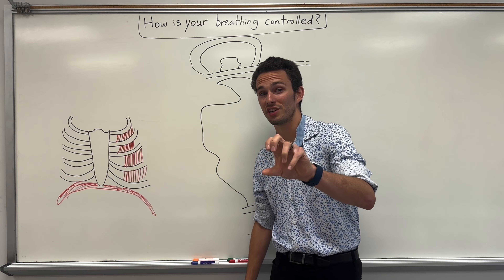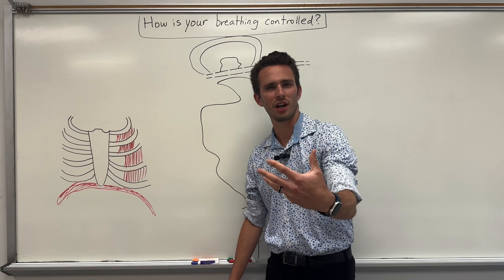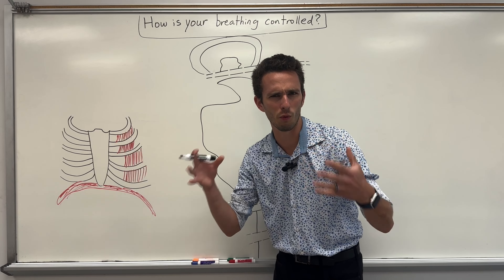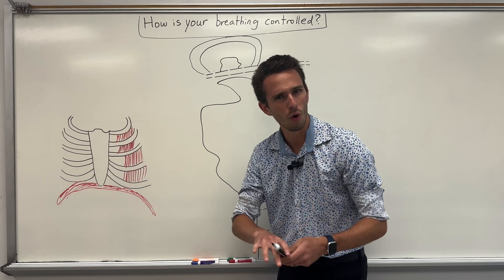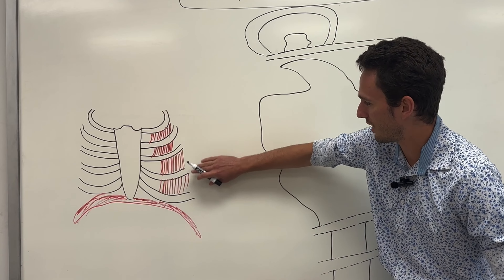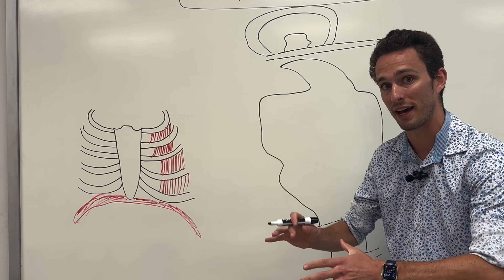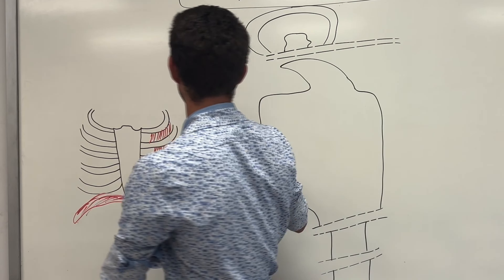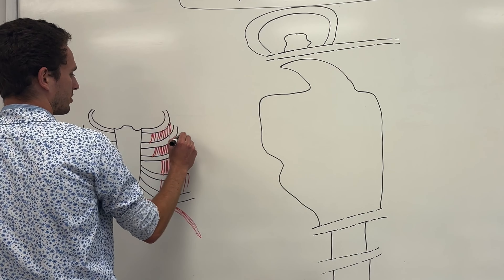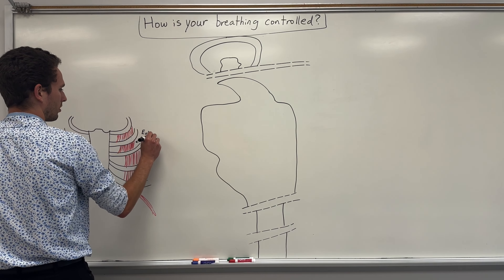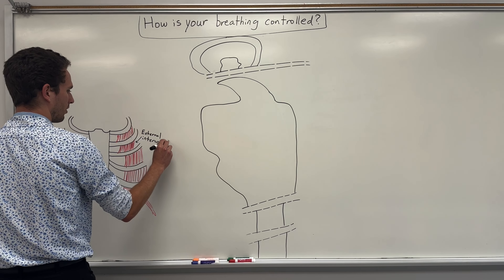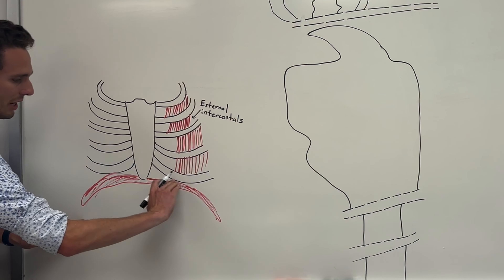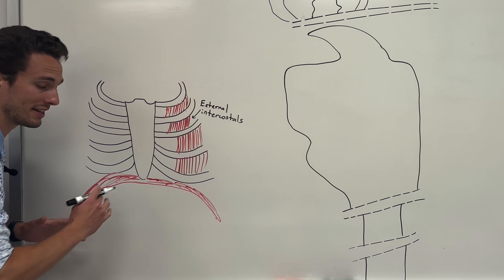So let's begin with what you just did — you voluntarily controlled your breathing. Well, how does that work? There are two muscle groups we need to know about here, and they're around your rib cage. Here's your rib cage, and these are muscles attached from rib to rib on the outside, so we call them the external intercostal muscles. We also need to know about this dome-shaped muscle called the diaphragm.